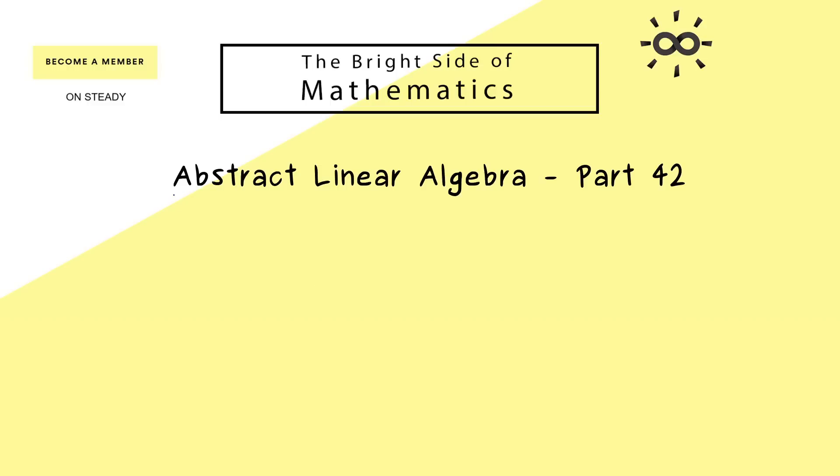Hello and welcome back to abstract linear algebra, the video course where we talk about some more advanced topics in linear algebra. Indeed, in today's part 42 we will talk about so-called Jordan chains that are used for the transformation into the Jordan normal form. In particular, this video will close the whole theory about the Jordan normal form. So I can already promise you, in the next videos we will look at some examples as well.